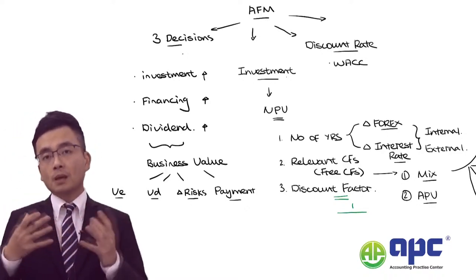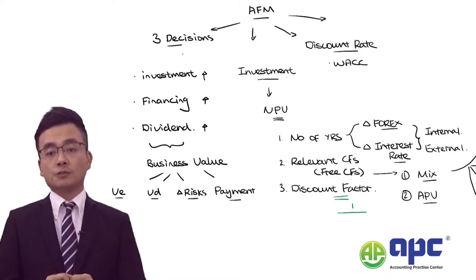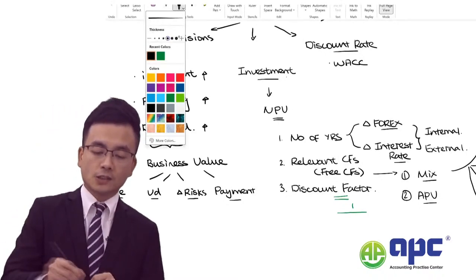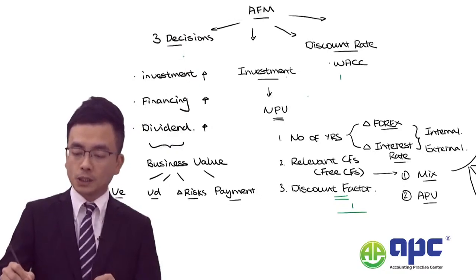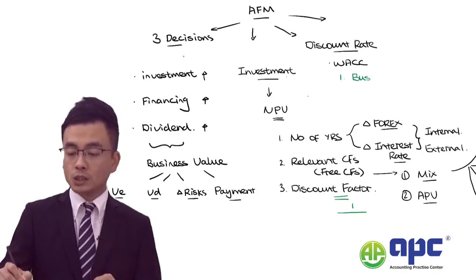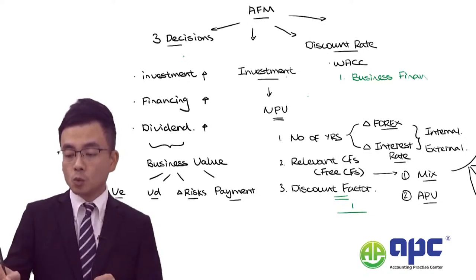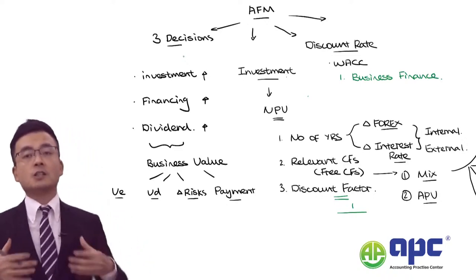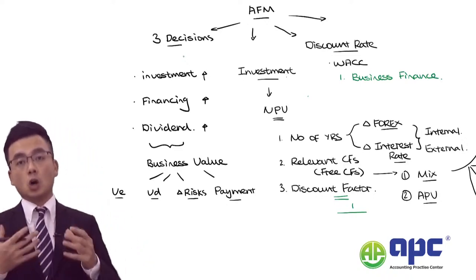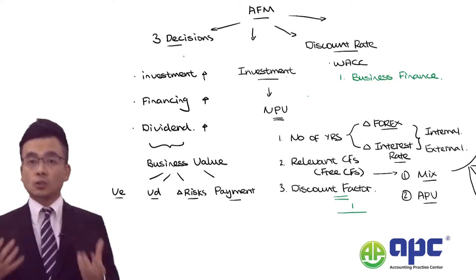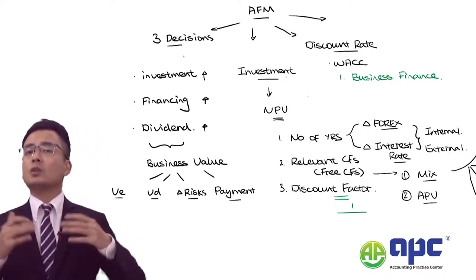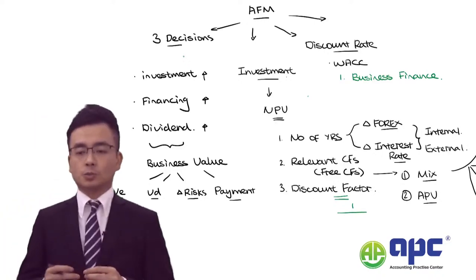When we talk about the weighted average cost of capital, I would like to focus on where the money comes from — which means we need to look at business finance. For example, we can borrow money from the bank, list our company on the stock exchange, lease an asset, or use Islamic finance options.